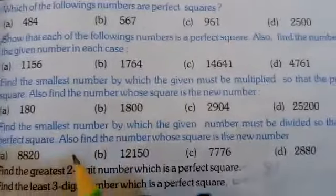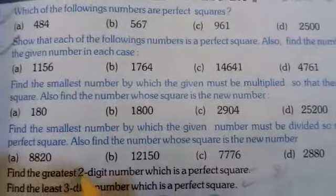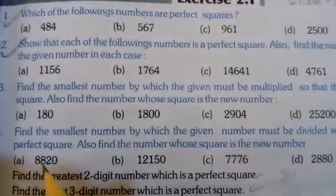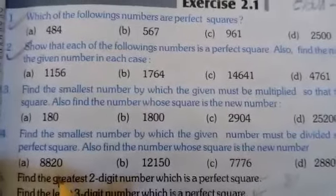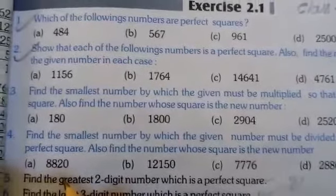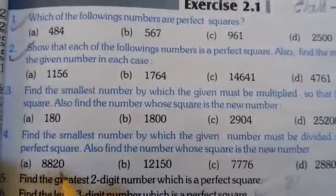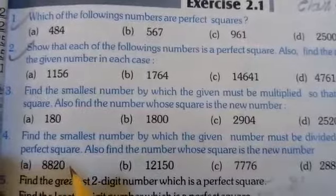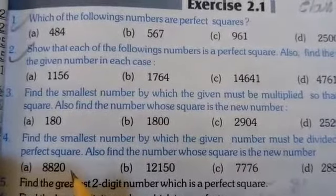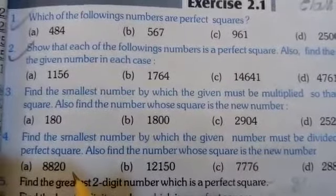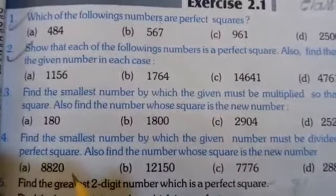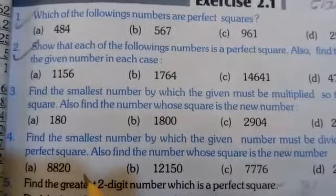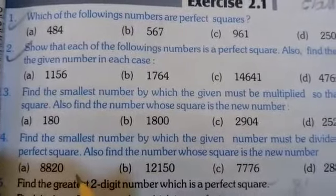So, hume karna kya hai yahan par? Kuch hume parts diya gaya hai, jaise 8,820. Hume find karna hai ki jo number hai, is number mein kis chote se chote number se hum divide karein, taaki jo hamara naya number hai woh ek perfect square ban jaye.